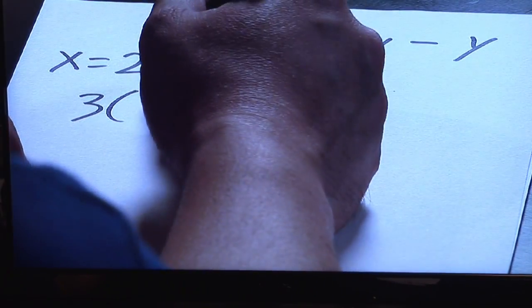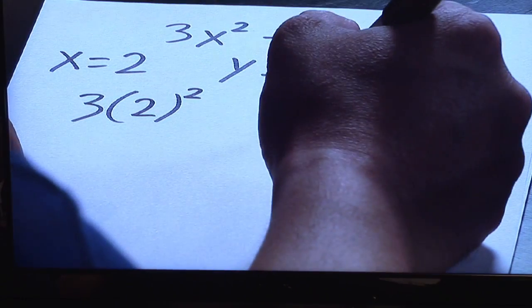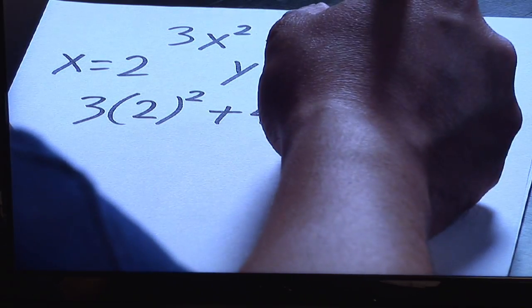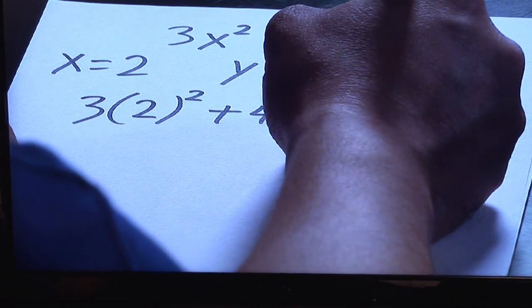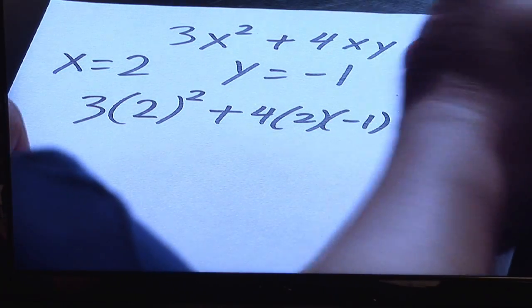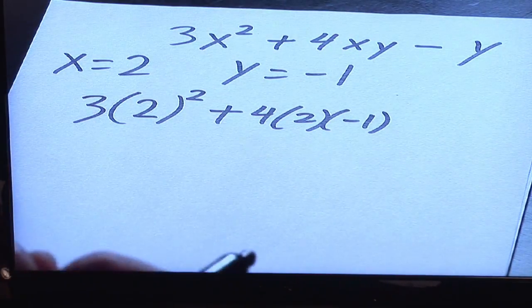x, you know it to be 2, so you're going to put the 2 in there, and keep everything else the same. So keep the 3, keep the square, plus 4 times, you know x is equal to 2, and you know y is equal to negative 1. You notice I'm putting parentheses there to kind of help separate the numbers a little bit better.